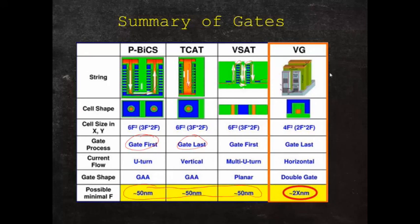The vertical gate is a gate-last construction. The current flows horizontal, and it's a double gate design. This has the potential to work the 2x nanometer node, and that means that this is probably one of the most promising of the 3D NAND structures to come out of the production lines in the industry.